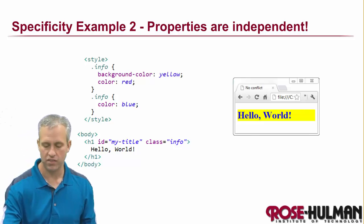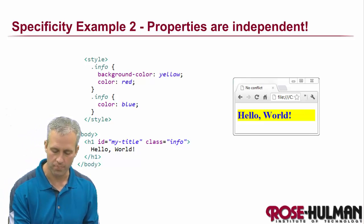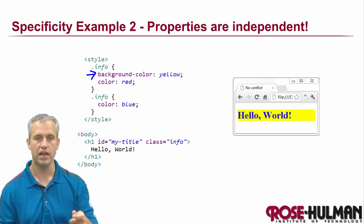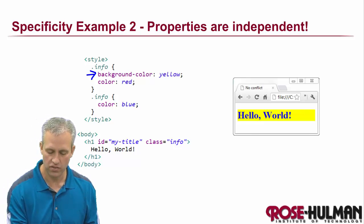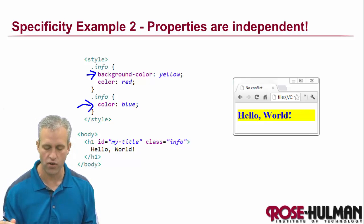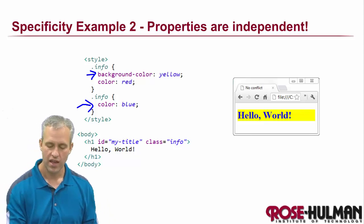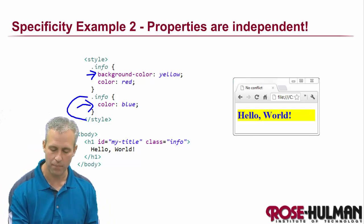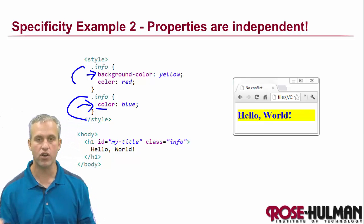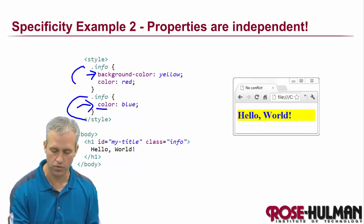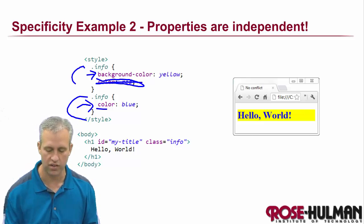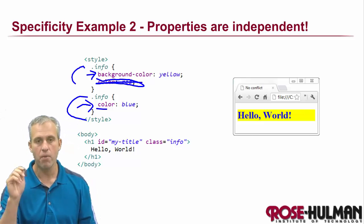Properties are all independent. Each property has its own decision-making that happens. Just because the second info rule comes later than the first doesn't mean everything in there happens and nothing from the first happens. It's specifically like: for color, what color should I be? I have two rules that match. The last one says I'm blue, so the first one doesn't get used at all.